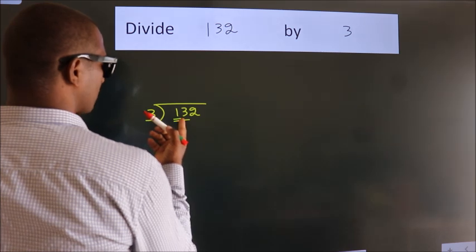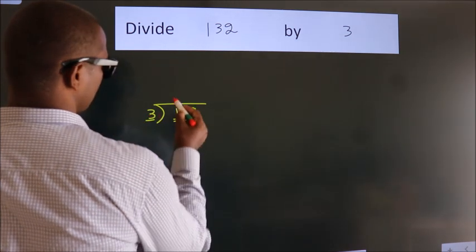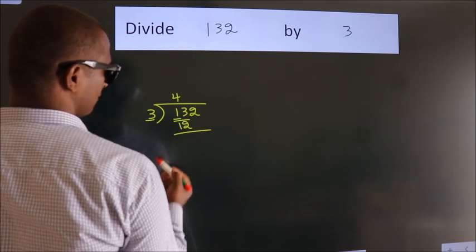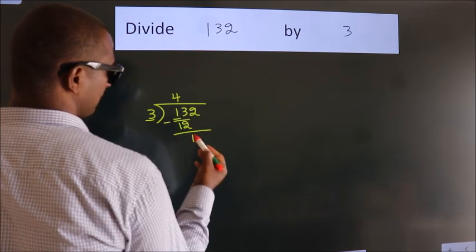A number close to 13 in the 3 table is 3 times 4, which is 12. Now, we should subtract. We get 1.